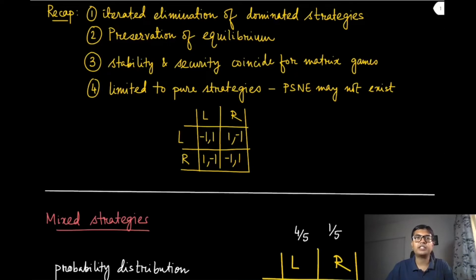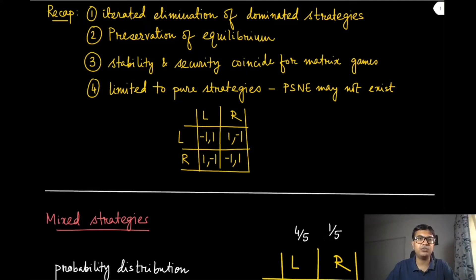So far we have discussed various types of properties and various results involving those properties. Let us do a quick recap. We have discussed iterated elimination of dominated strategies in order to find some equilibrium of the game. We have talked about preservation of equilibrium when we do this kind of iterated elimination. We have defined the stability notion by pure strategy Nash equilibrium and the security notion by min-max and max-min strategies, and we have shown that these two notions coincide in the case of the special game called matrix games.